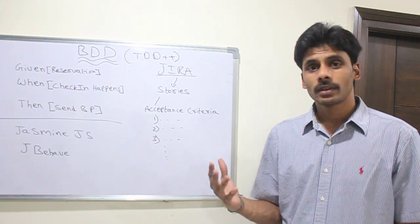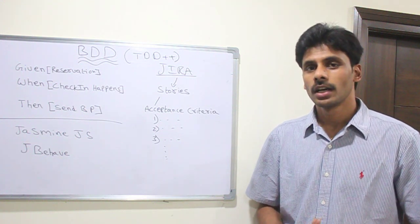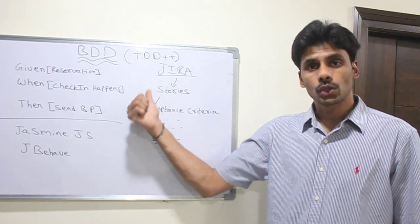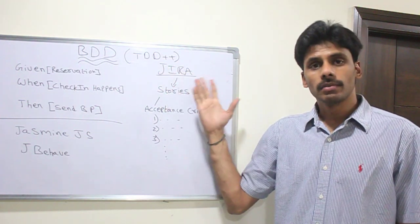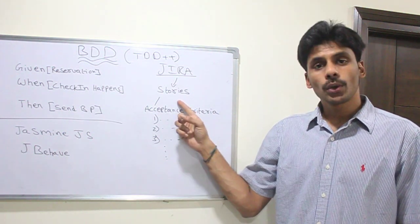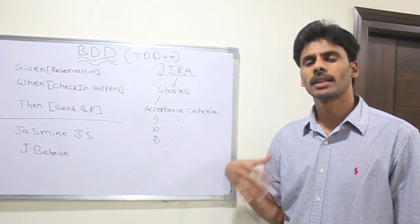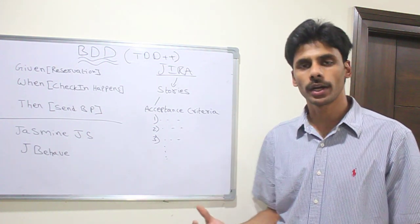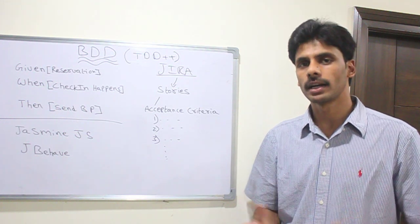But BDD directly links the requirements or the specifications with the tests we write. The way it does it is in the agile world, typically the requirements are expressed as stories, and these stories usually sit in Jira or similar story repository tool. Each story comprises of some acceptance criteria along with the actual requirements. There is something called acceptance criteria which is put in by the product owner or the business analyst once they discuss it with the development team and even the testing team.